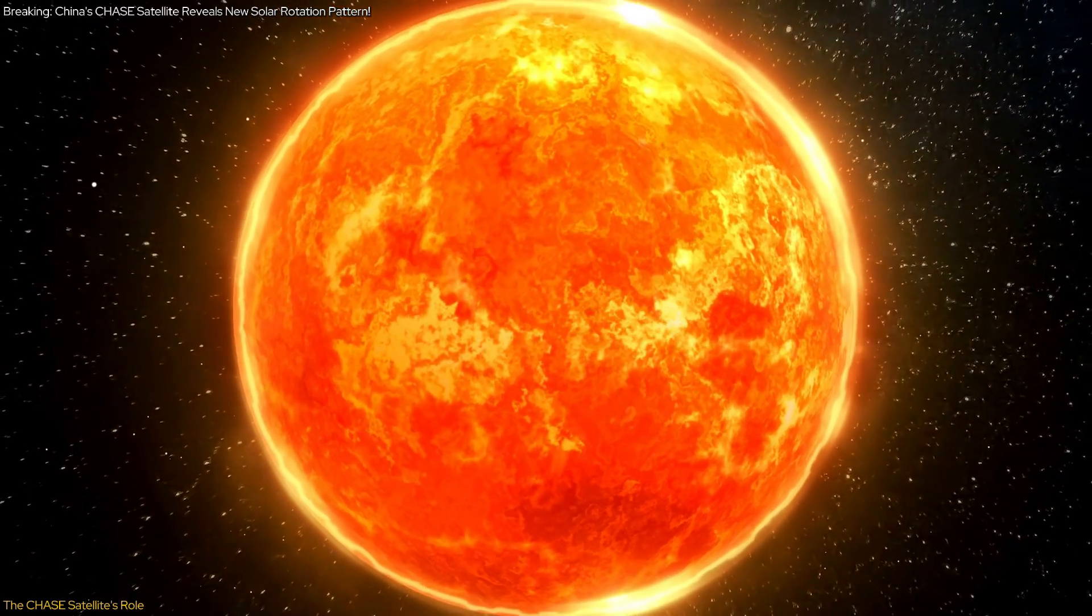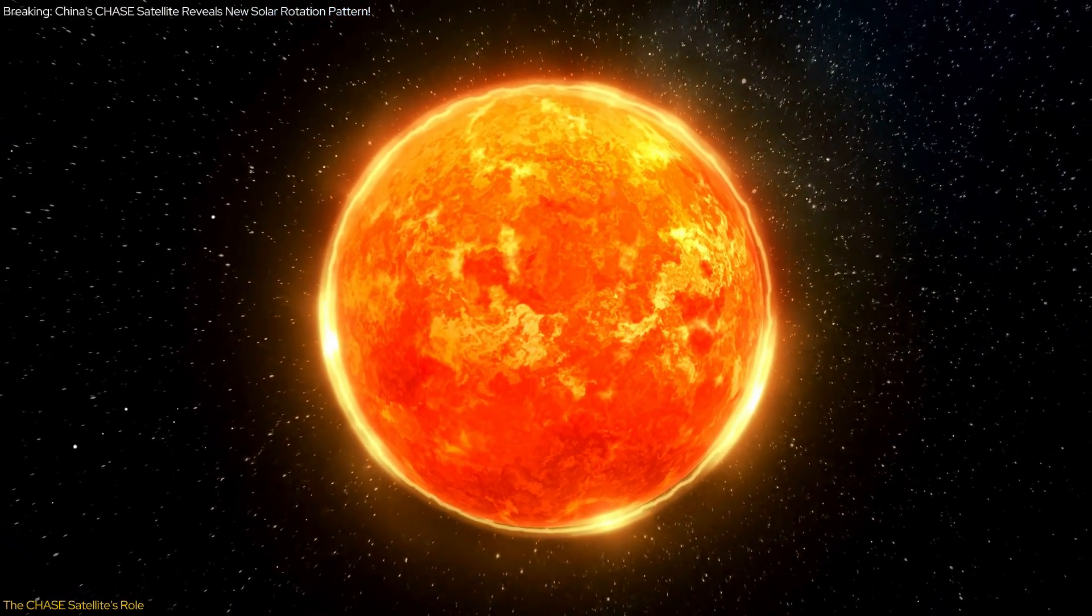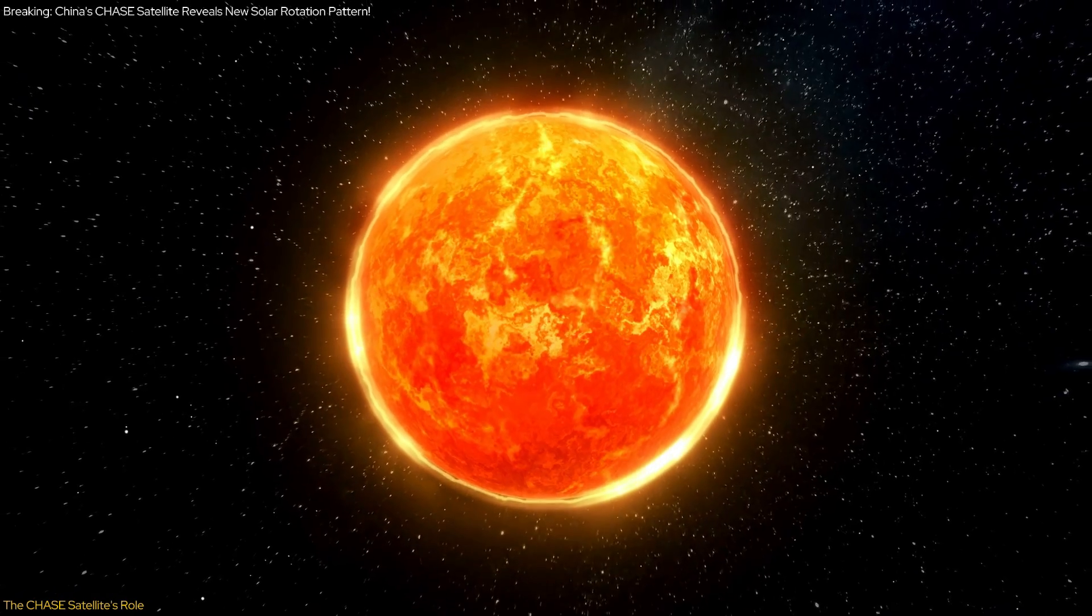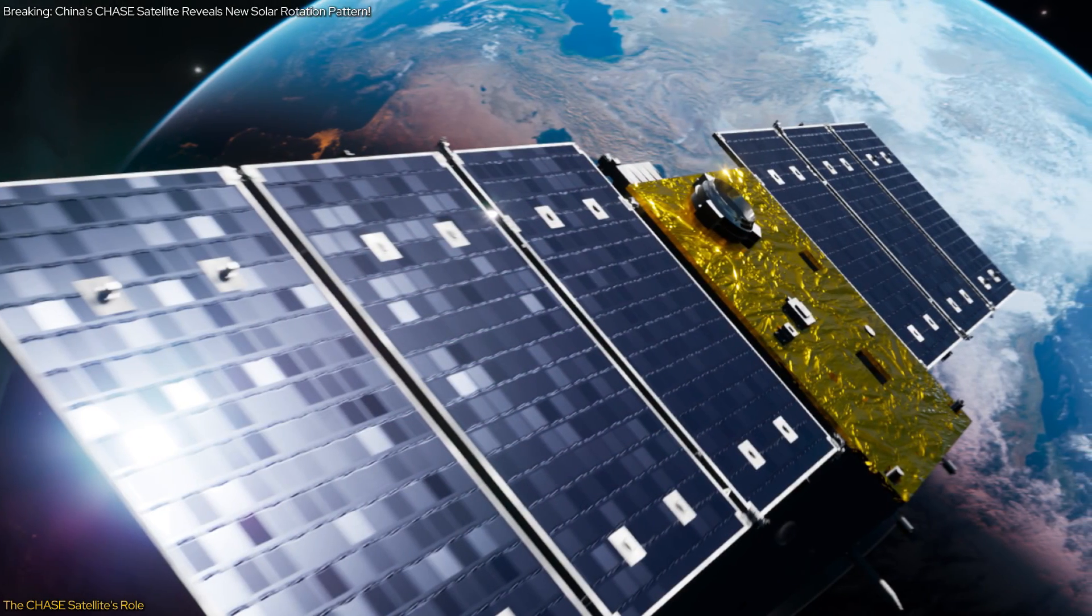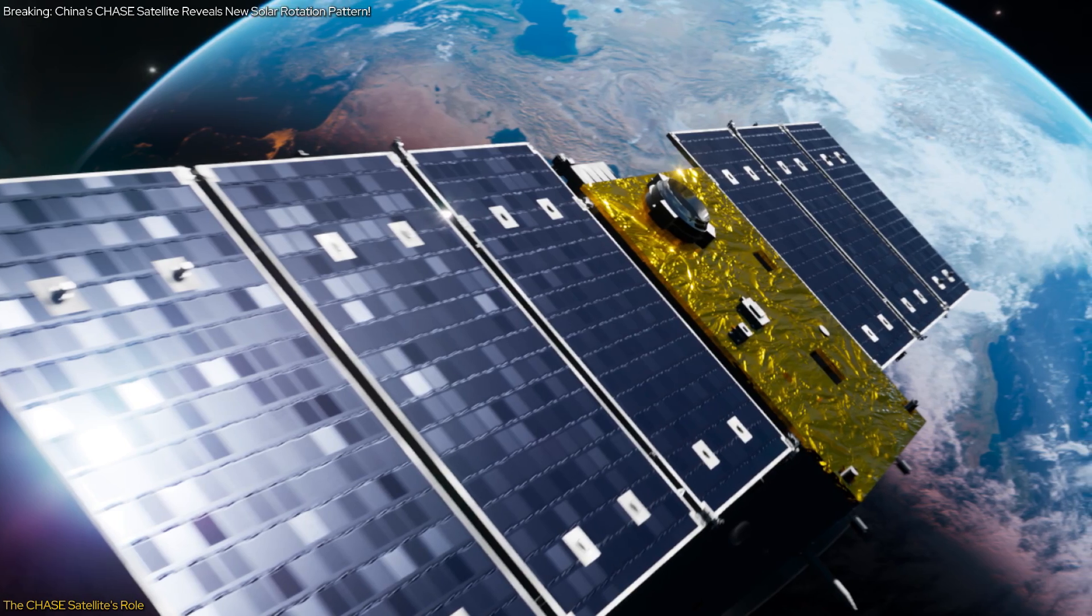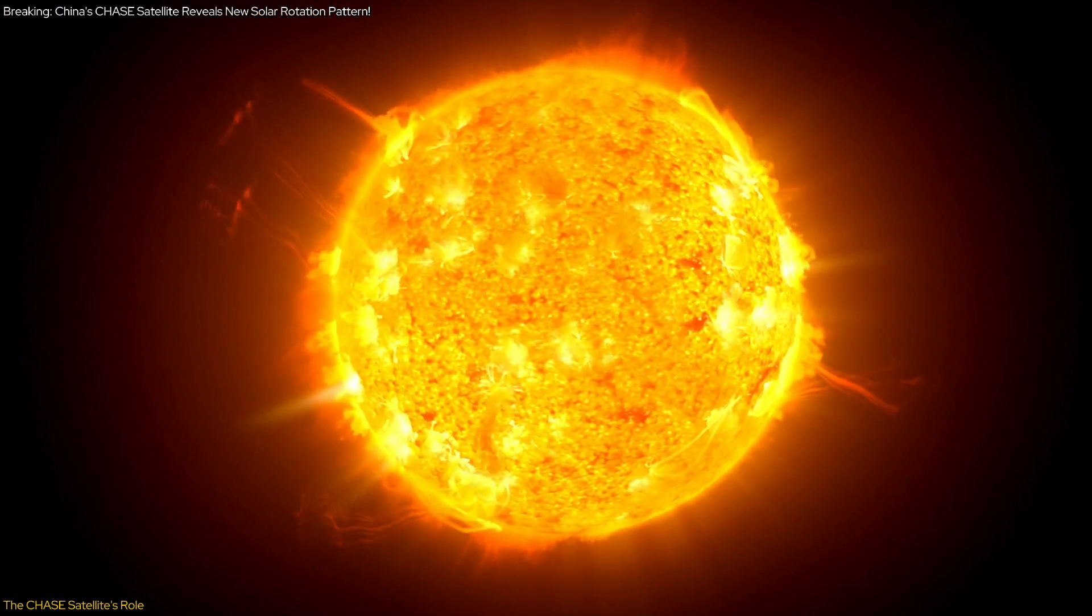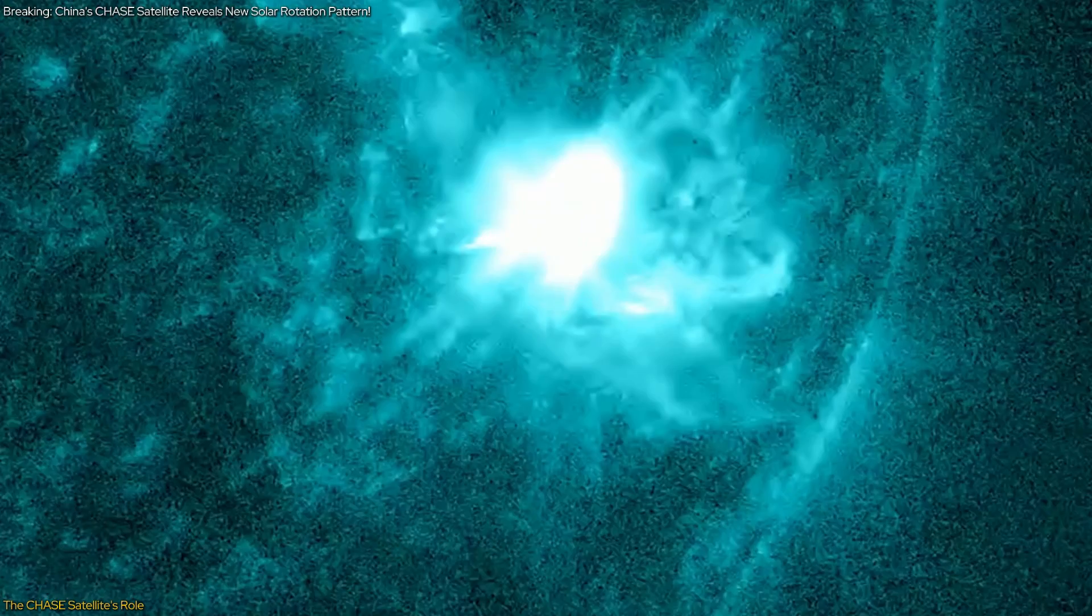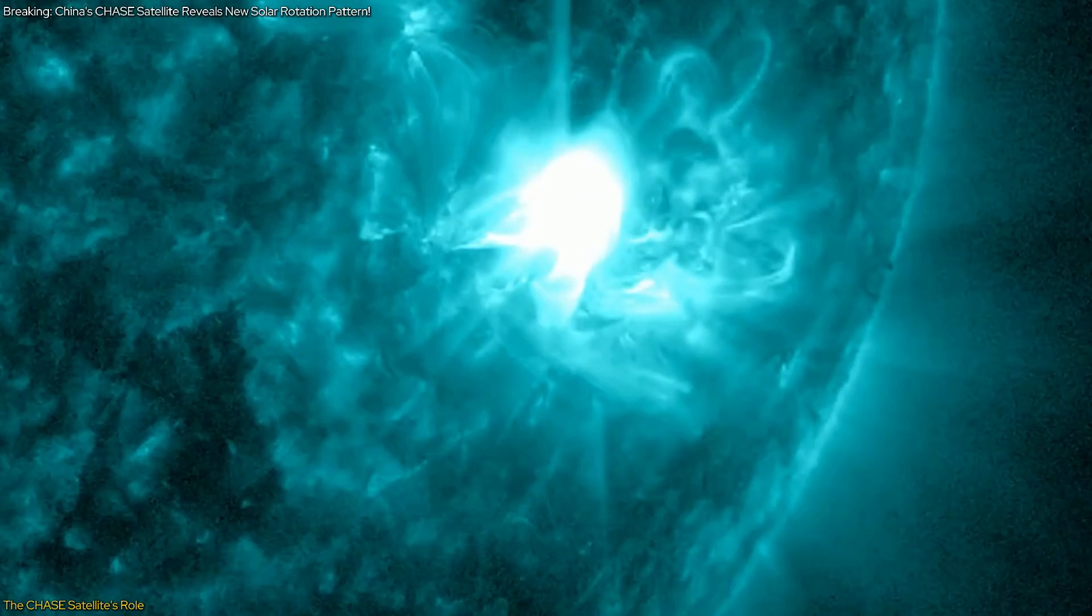This innovative design allows Chase to capture high-resolution images and data of the sun's surface and atmosphere, offering a consistent and comprehensive view of our star. Since its launch, Chase has been instrumental in monitoring solar phenomena, including flares, sunspots, and the intricate movements within the solar atmosphere. Its capacity to generate precise three-dimensional models of the solar atmosphere is what led to this groundbreaking discovery.